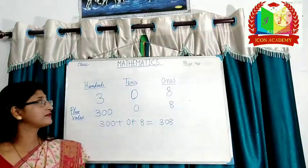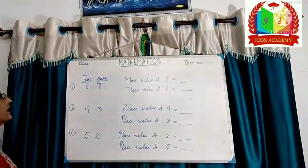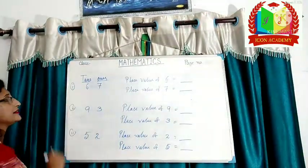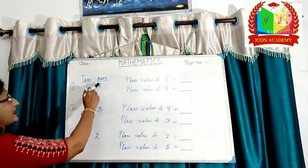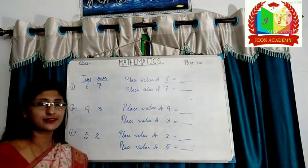The place value of zero is always zero. Solve this example. Here, the number is sixty-seven. Six is on tens place. Seven is on ones place. So, what is the place value of six?